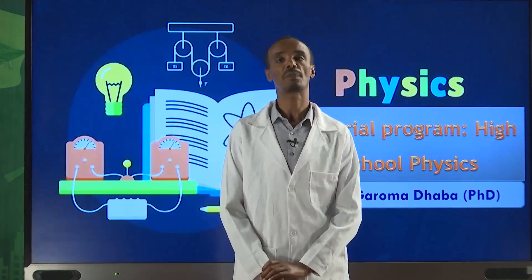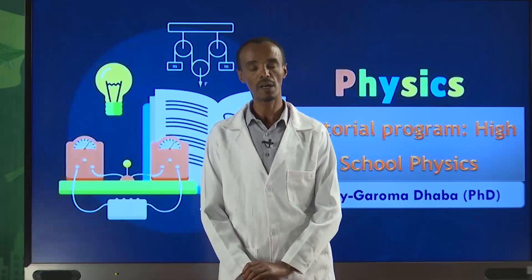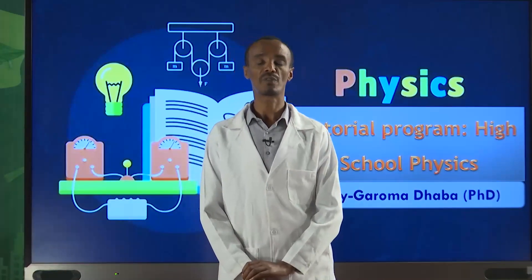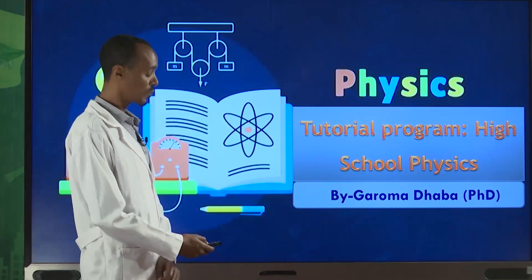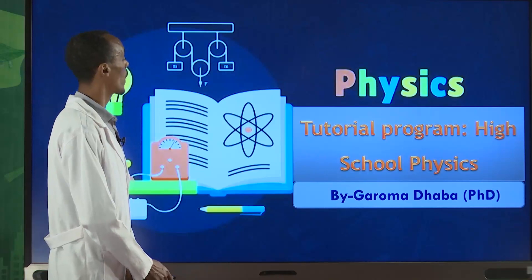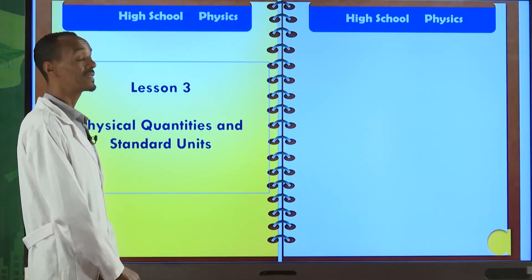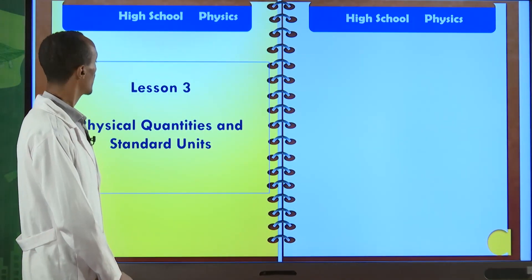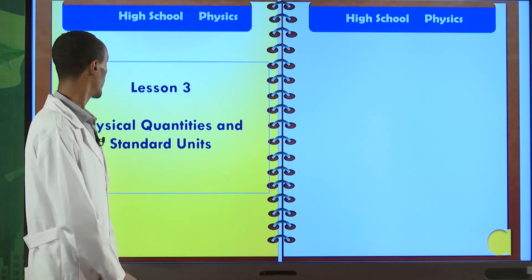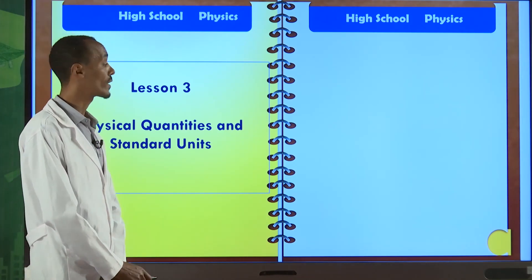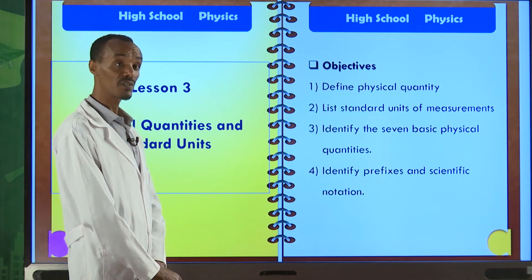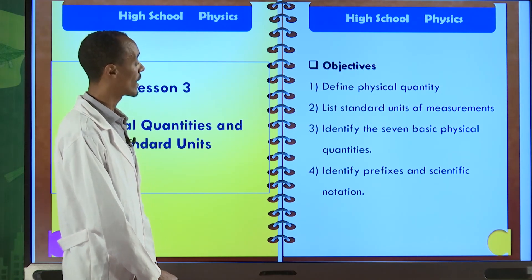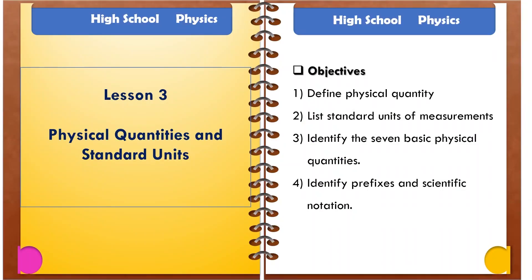Hello students, this is Garo Madaba. Welcome to the physics tutorial lesson. This is the third tutorial lesson. The topic for this lesson is physical quantities and standard units. The learning competencies — the objectives to be achieved at the end of this lesson — are: one, define what a physical quantity is.